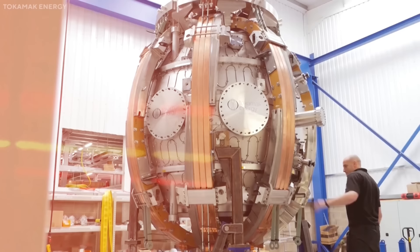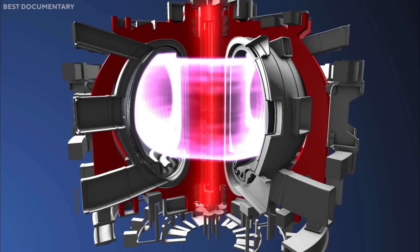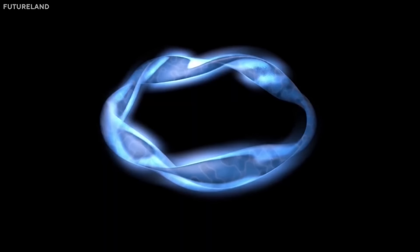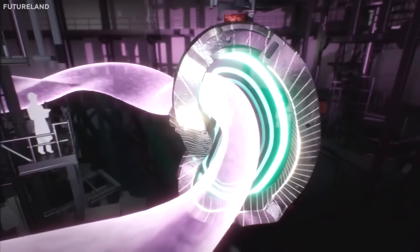A tokamak is a donut-shaped device that creates a toroidal or ring-shaped magnetic field by running a large electric current through the plasma. The plasma is also surrounded by another set of coils that produce a poloidal or twisted magnetic field, resulting in a helical field that keeps the plasma in equilibrium. So, the tokamak is the basis of the ITER project.